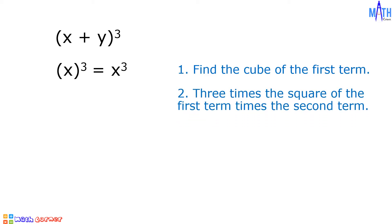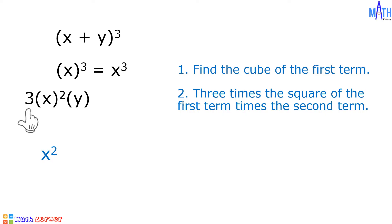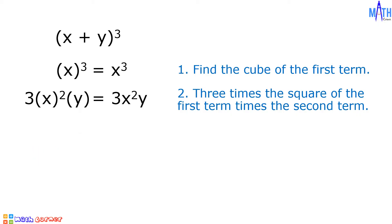Step number 2: 3 times the square of the first term times the second term. We have 3 times square of x times y. Square of x is equal to x squared. Times 3 equals 3x squared. Times y equals 3x squared y.